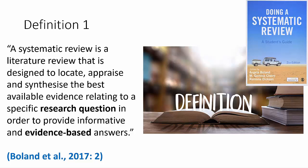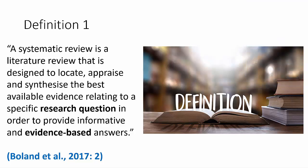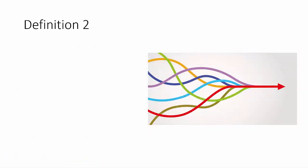According to Boland, a systematic review is a literature review that is designed to locate, appraise, and synthesize the best available evidence relating to a specific research question in order to provide informative and evidence-based answers. In other words, it is some sort of synthesis or joining together of the results of a number of primary studies that were all looking at the same topic.